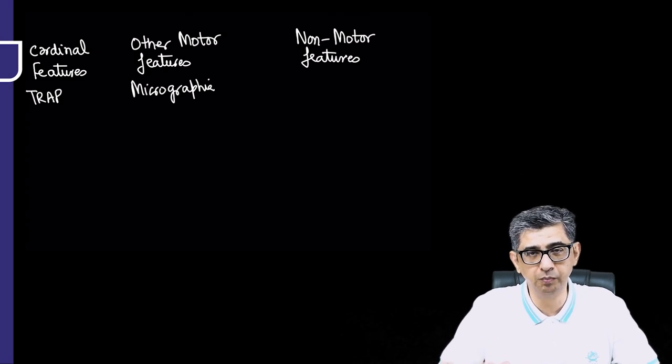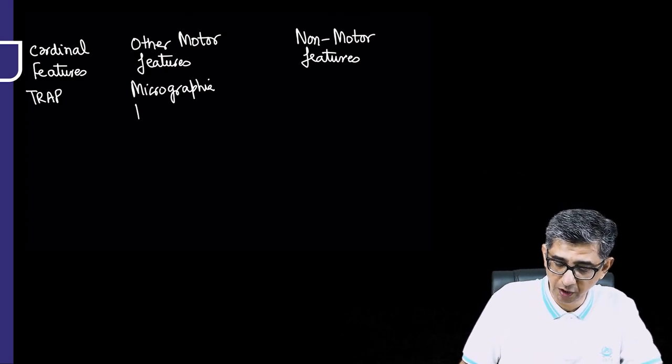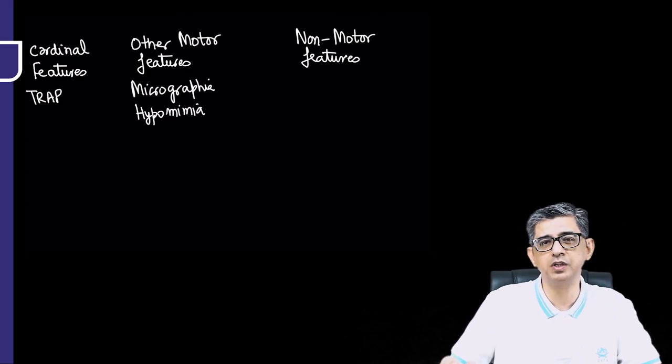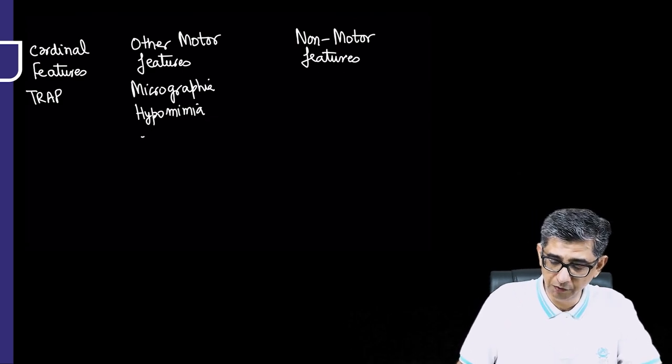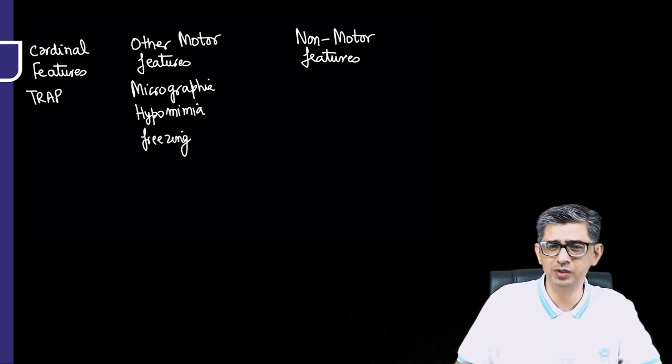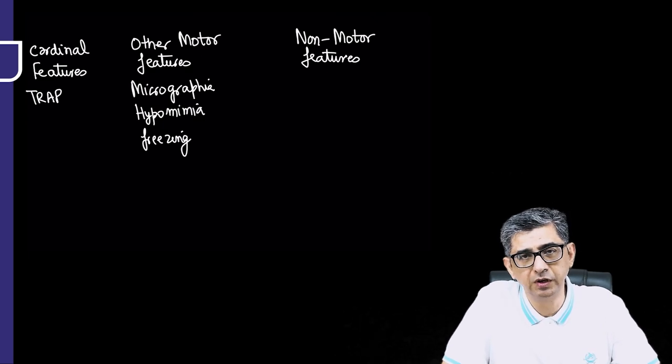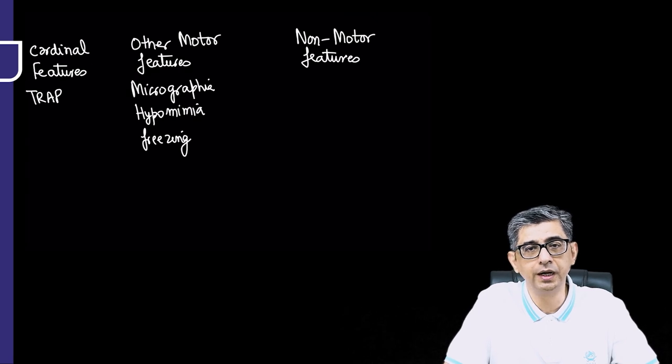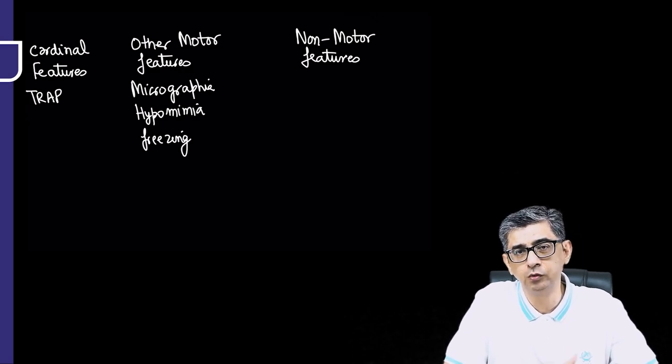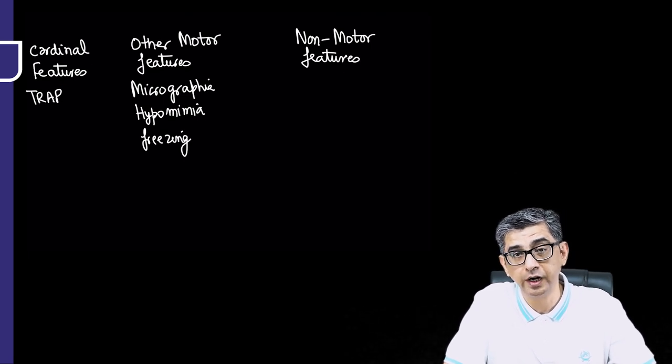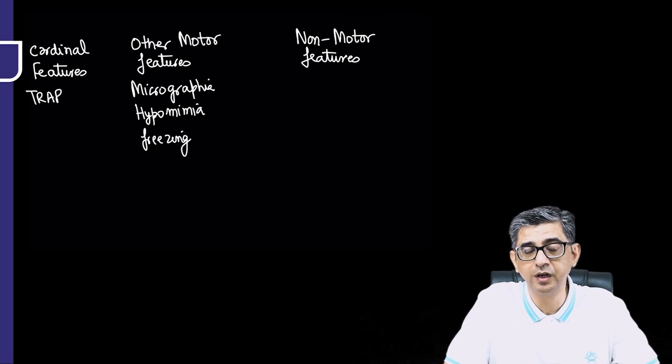You would be having expressionless face, so instead of writing masked facies or expressionless face, you might write hypomimia. In fact, when you give a command to these patients to start walking, like you simply told a Parkinson disease patient, 'Sir, when I give you the command, please start walking,' so you said 'start walking' and he's still standing there. So you repeated your command a little loudly, thinking that maybe the old person is hard of hearing, and you said, 'Sir, please start walking when I instructed you.'